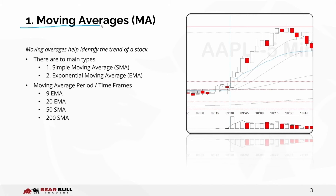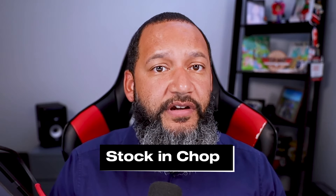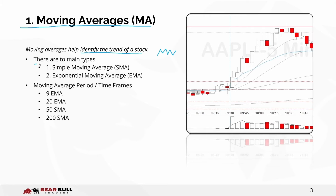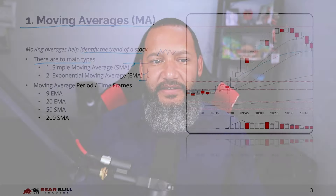Starting with the first one: moving averages. Moving averages are very popular — a lot of traders have these on their charts because they help you identify the trend of a stock, whether it's bullish, bearish, or if you're stuck in chop. There are two main types: the SMA and the EMA. The big difference is that the SMA lags a little and is not as sensitive to price action the way the EMA is.